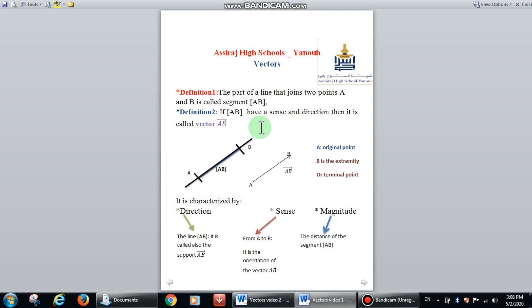So, if you are given the following line, on this line you have two points A and B. Then the part of this line joining A and B is called segment AB, and you can name it as segment BA.